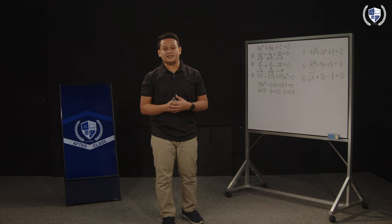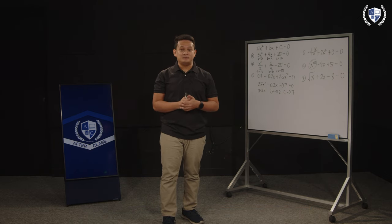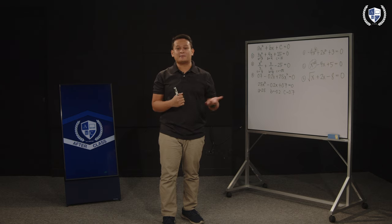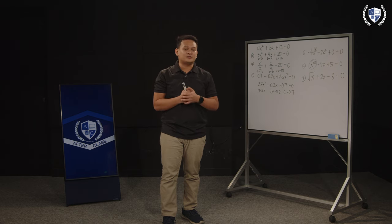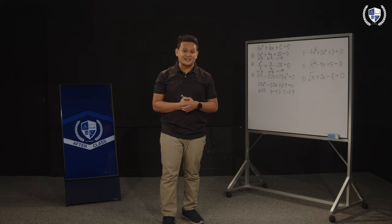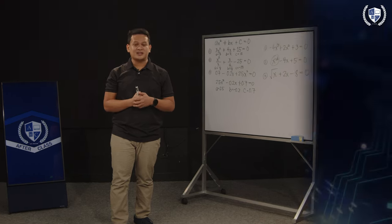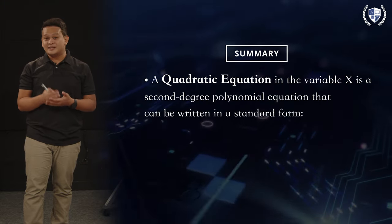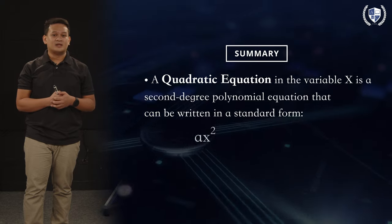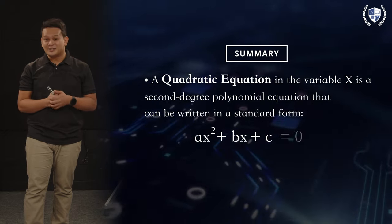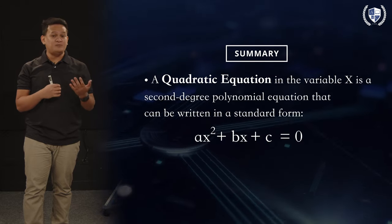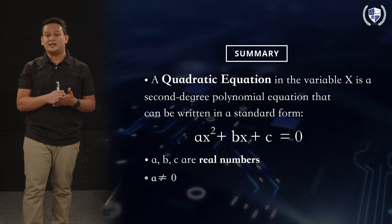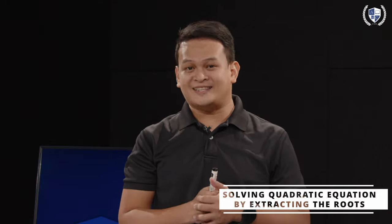Now, you know how to get or determine the values of a, b, and c. And to recap all the things that we've learned today, we've just illustrated quadratic equations. What are quadratic equations? Quadratic equations are second-degree polynomial equations that can be written in standard form, ax² + bx + c = 0. And a, b, and c are real numbers wherein your a can never be equal to 0. So, in our upcoming lessons, we will now be solving quadratic equations.